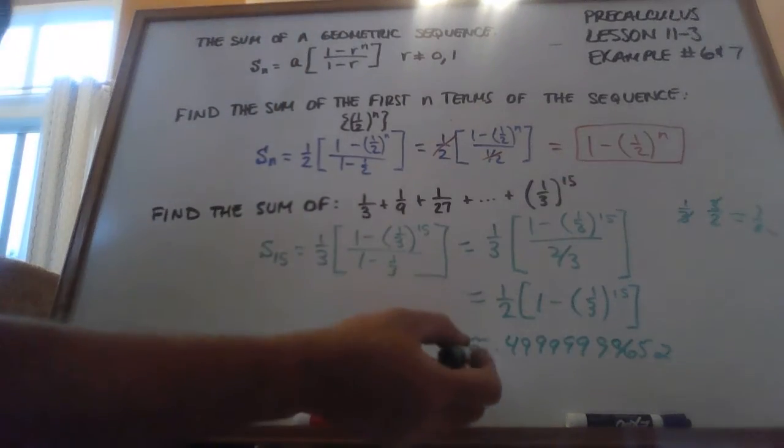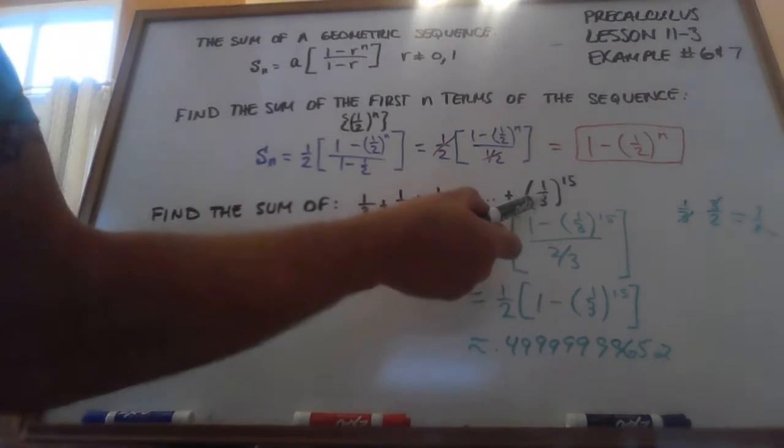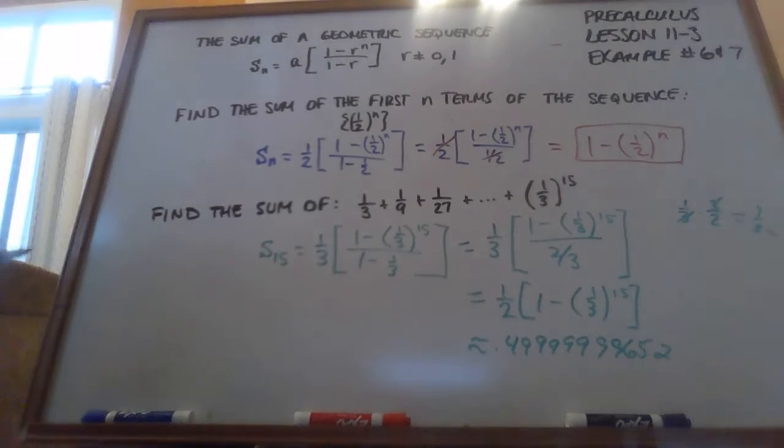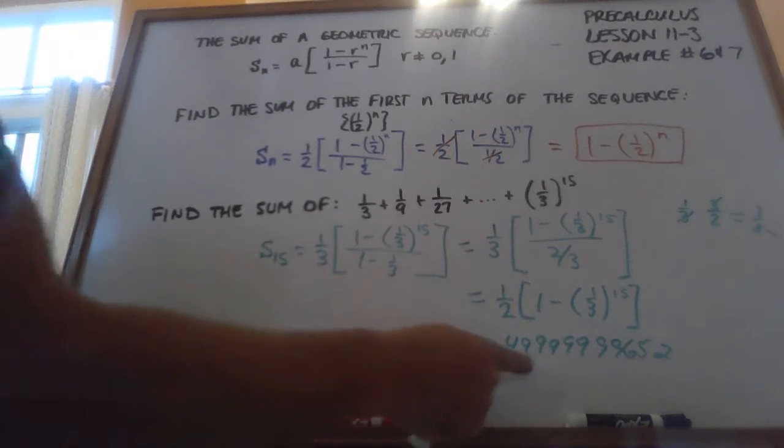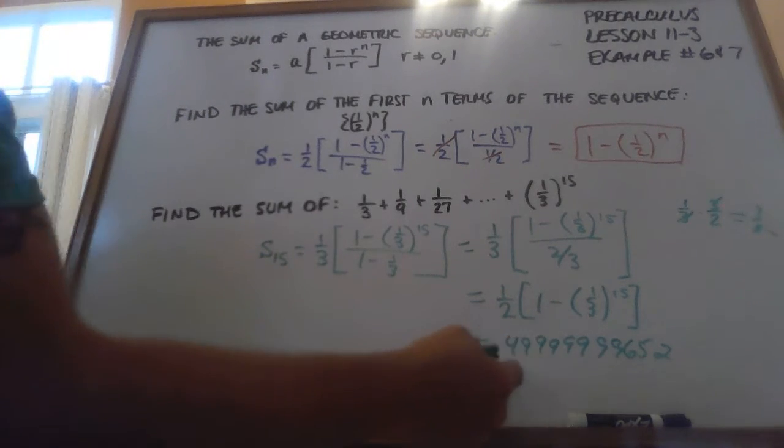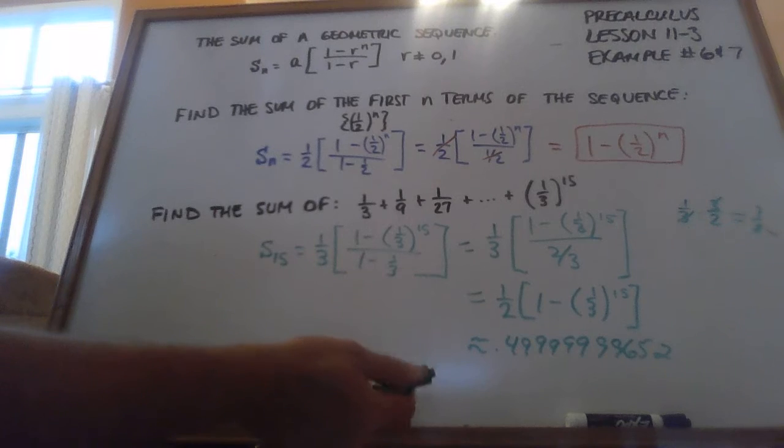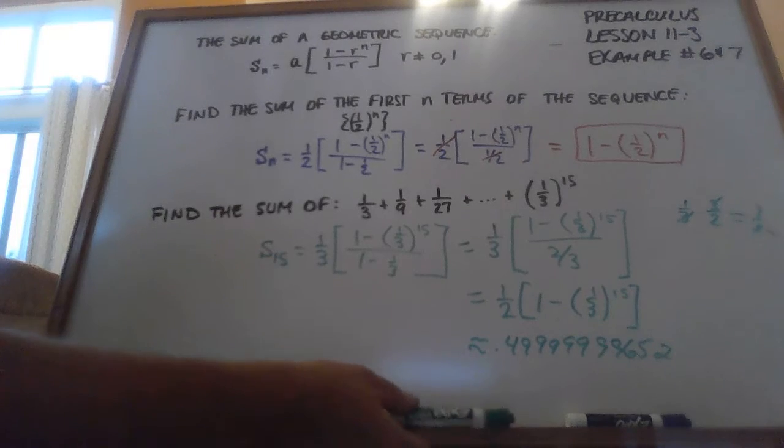Now, you might be able to guess here, if I take this, instead of going to the 15th term, if I keep going, what is that going to approach? This is approaching 0.5. So this has a limit, and the limit's going to be 0.5. It's going to get as close as I want to 0.5, but it's never quite going to get there.